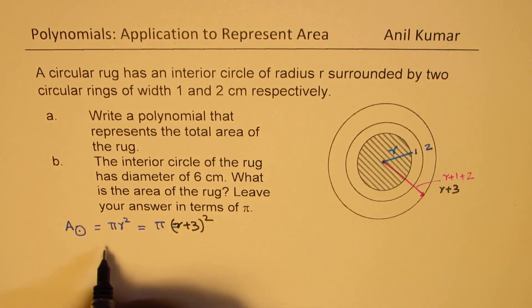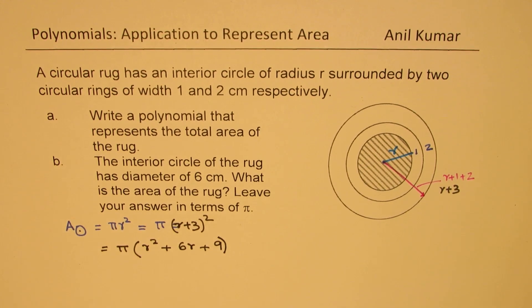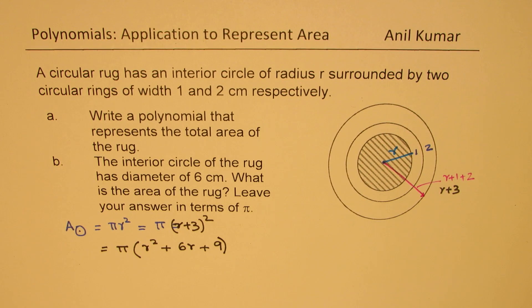So what we get here is π times, when you expand this, r² plus 2ab which is 6r, plus 3² which is 9. So that becomes the expression for area in terms of π.